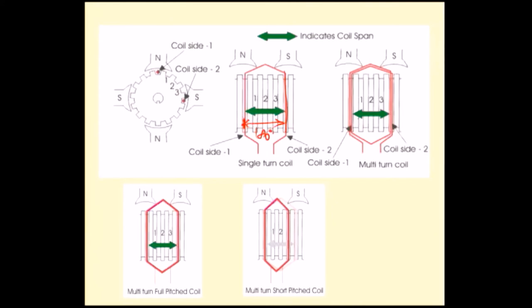Full pitch means the first slot to the 10th slot. In our example, slot per pole is 10 (20 divided by 2). This means the first slot and the other side of the coil should go through the 10th slot. If the other side is placed in the 9th slot, that is called short pitch.